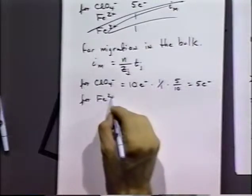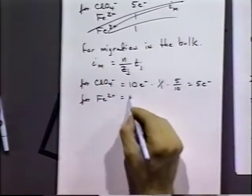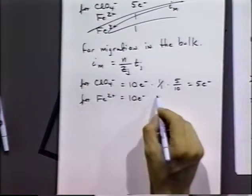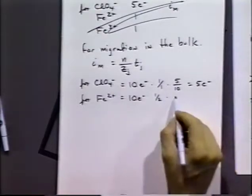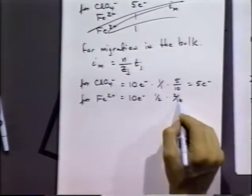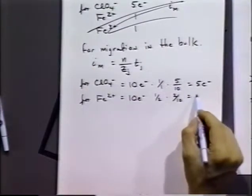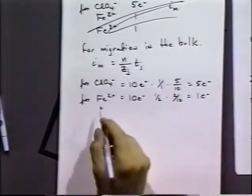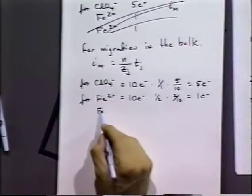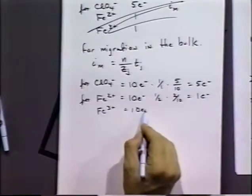For iron two plus, again ten electrons, it has a one half charge times its two tenths transference number. And so that refers to one electron being carried. And for iron three plus, same calculation.